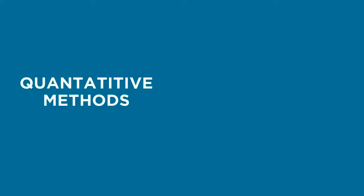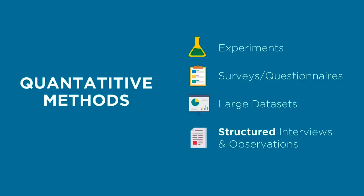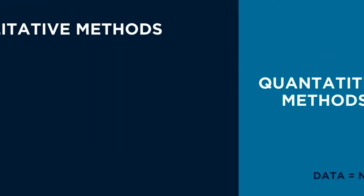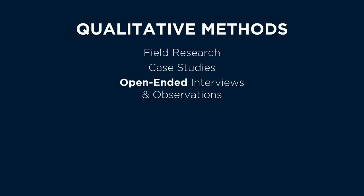Since the goals of quantitative and qualitative studies are different, their methods and data are different too. A quantitative study might use experiments, surveys or questionnaires, analysis of large datasets like Statistics Canada data, or structured interviews and observations where questions and observation criteria are exactly the same for each participant. Quantitative studies tend to focus on numbers and things that can be measured. A qualitative study might use field research, case studies, or more open-ended interviews and observations where there's more room for flexibility and follow-up.